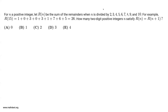For n, a positive integer, let r(n) be the sum of the remainders when n is divided by 2, 3, 4, 5, 6, 7, 8, 9, and 10. For example, r(15) is equal to 1 plus 0 plus 3 plus 0 plus 3 plus 1 plus 7 plus 6 plus 5, which equals 26.